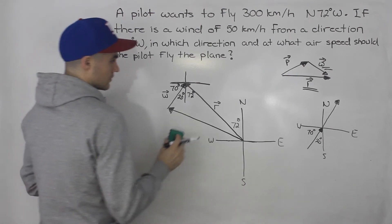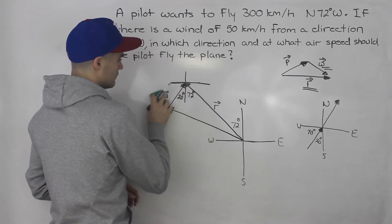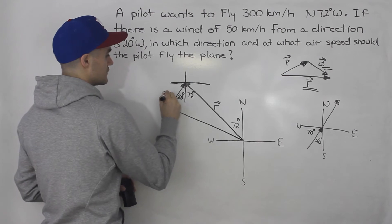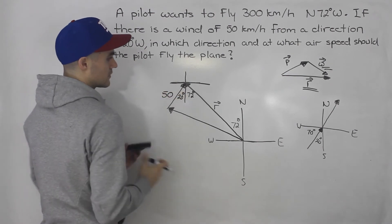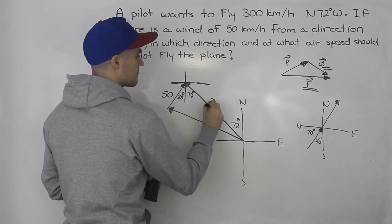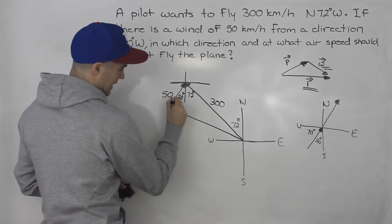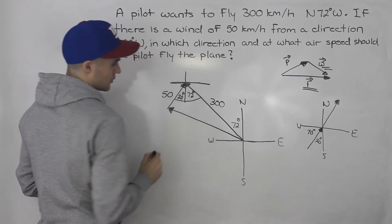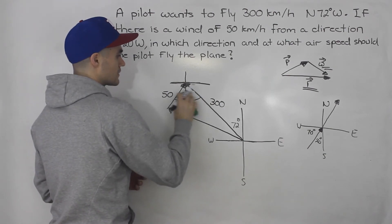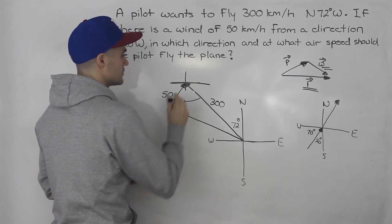Erasing some stuff we don't need — we don't need that 70 degrees, and instead I'm going to put the actual speed. So we got 50 kilometers per hour for the wind vector and 300 for the resultant. Notice that we can figure out that total angle: 20 plus 72 gives us 92 degrees.